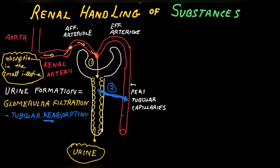Some substances go the opposite direction — from the peritubular capillaries, across the tubular epithelial cell, into the tubular lumen. This is known as tubular secretion. Therefore, urine formation is a sum of glomerular filtration minus tubular reabsorption plus tubular secretion.